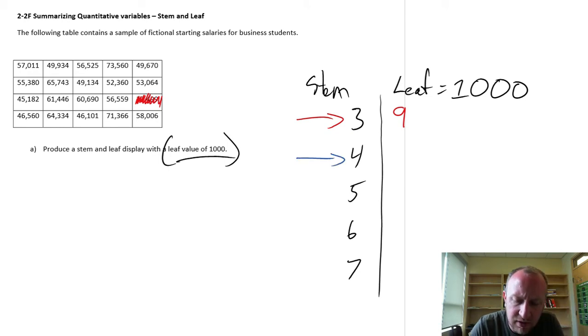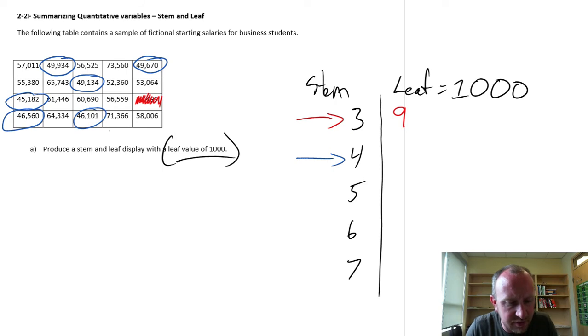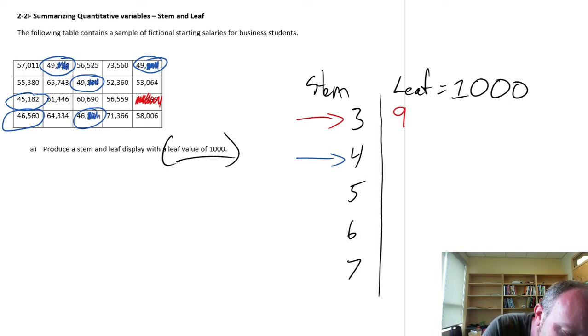So now let's look for a stem of 4. So I go through my data set, and here's one, there's another one, another, got a few here. Okay, I think that's it for my 4s. And now I just completely ignore these three digits on each of those observations. We don't need them for anything.